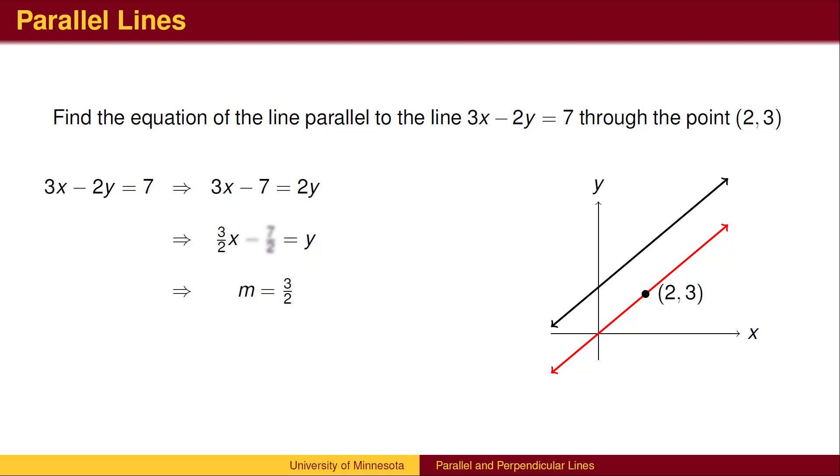It doesn't really matter what that number is. We know the slope is 3 halves from the slope-intercept form. Using the slope 3 halves and the given point, we can then use the point-slope form of a line to find the answer.